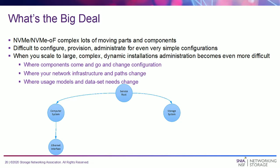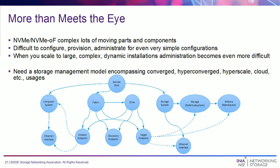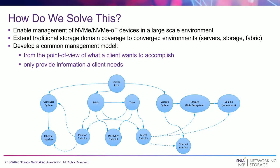If you were to ask someone to draw a systems configuration, you might get a high-level picture — your computer system, your fabric devices, and your storage devices. But there's really more than meets the eye here. A more accurate picture would show lots of features and components, each with their own properties and configuration knobs, many with their own sensors — and all of this needs to be administered, along with the relationships between them. What we need is a storage management model that enables efficiently managing the relevant components at a system scale, one that encompasses converged, hyperconverged, hyperscale, and cloud usages.